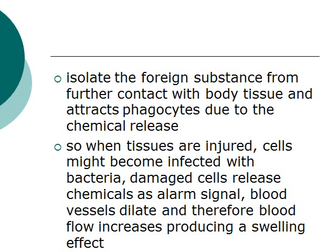In summary, when tissues are injured and cells become infected with bacteria, the cells release chemicals that create an alarm signal. In response, blood vessels in that tissue dilate, leading to increased blood flow, which produces a swelling effect to prevent foreign substances from further damaging tissues. The chemical releases by these cells attract phagocytes, which trigger something called an immune response.